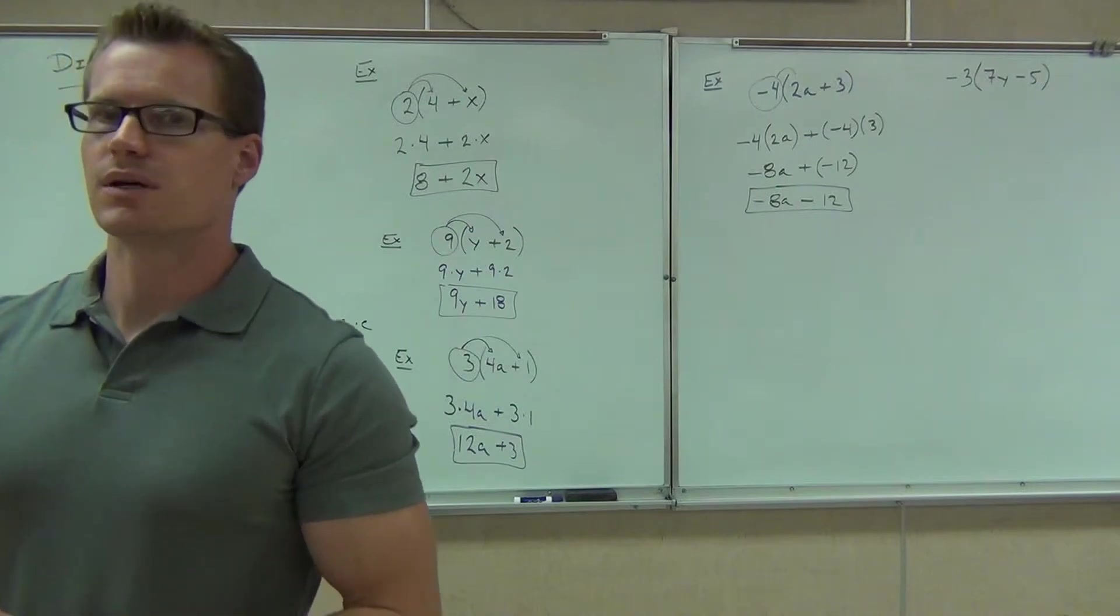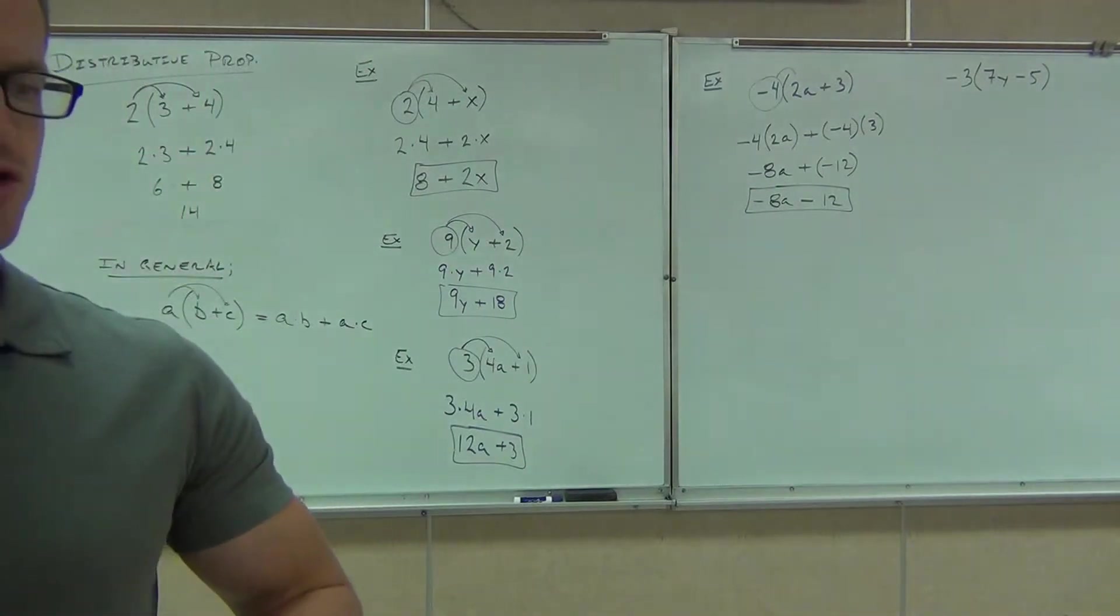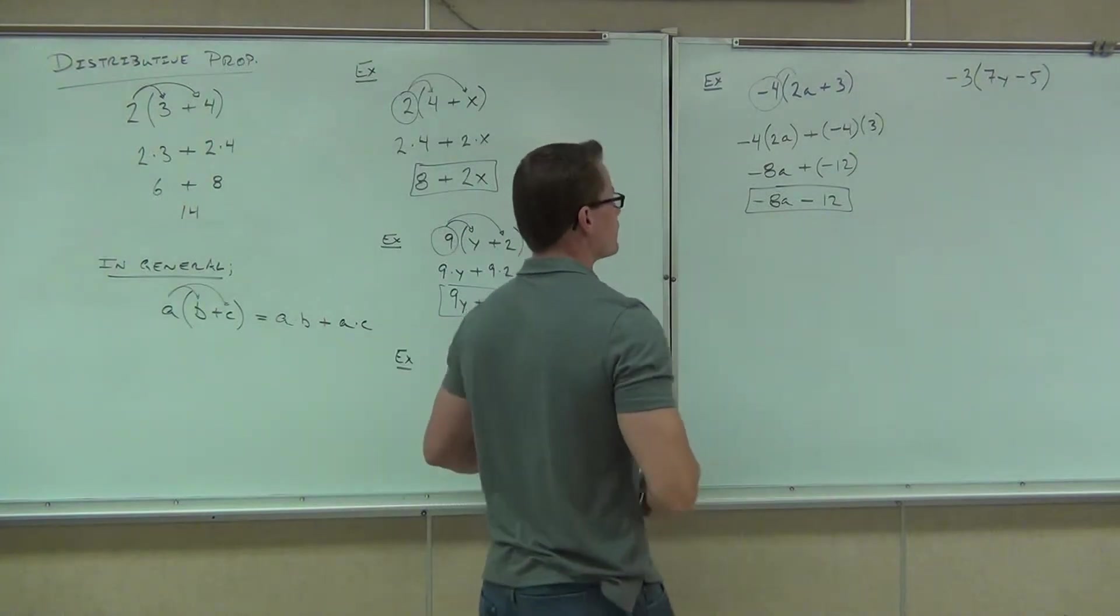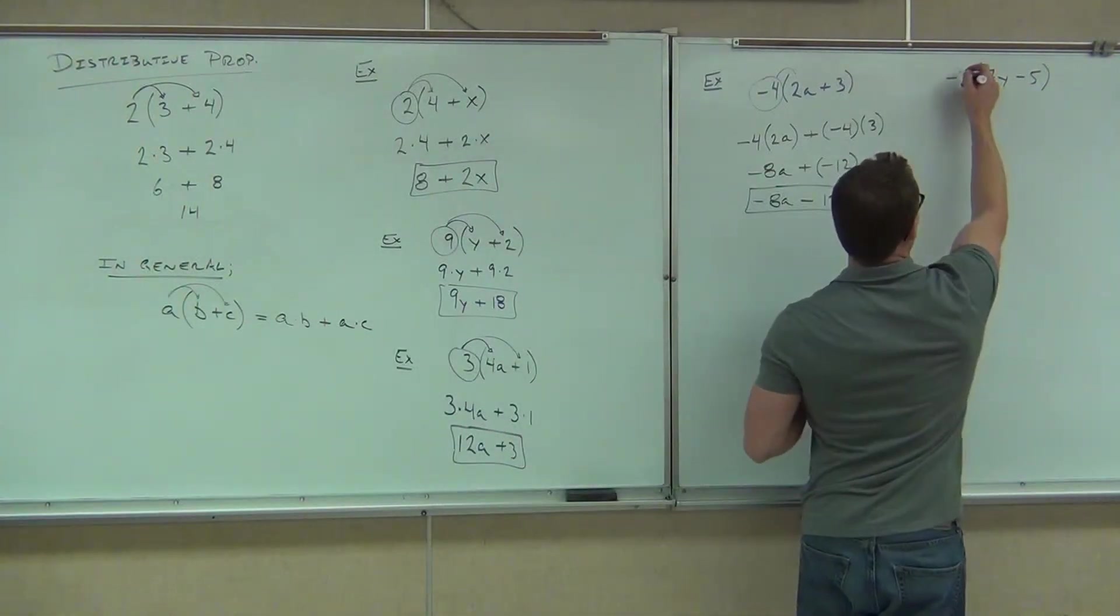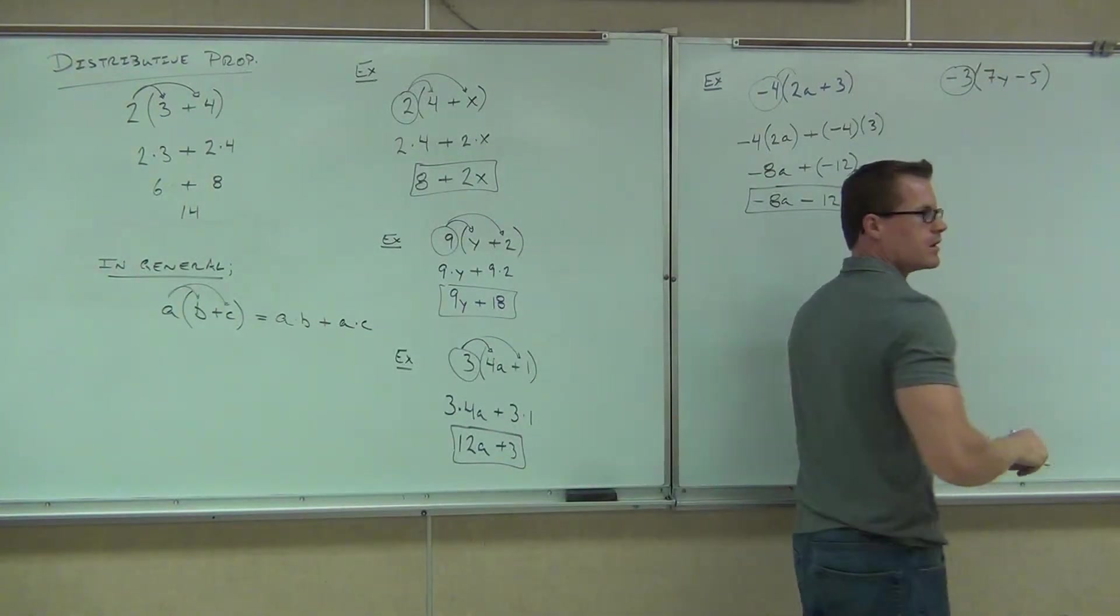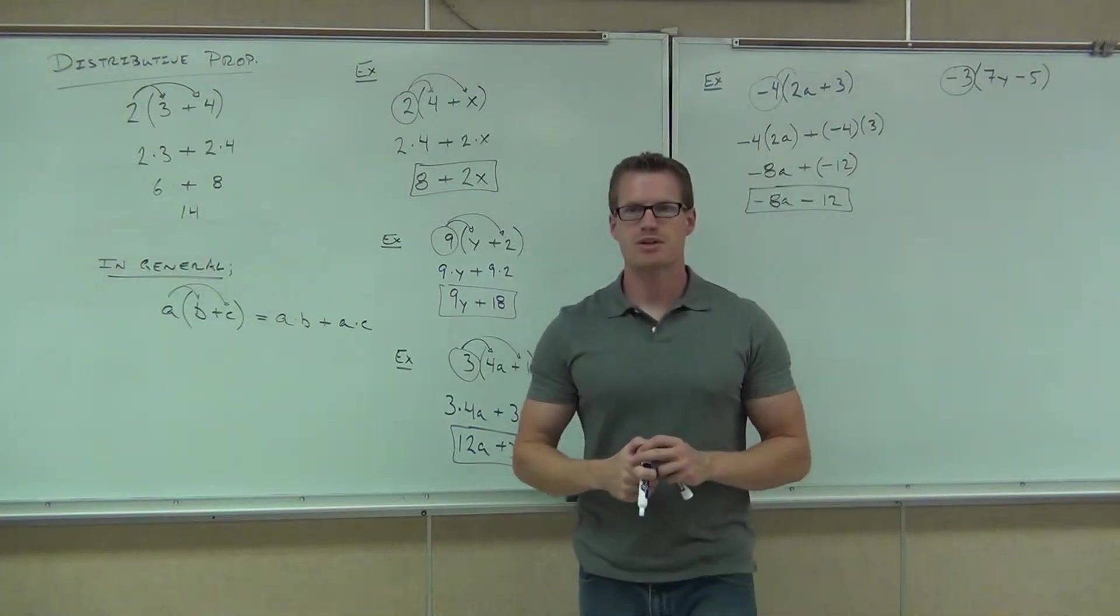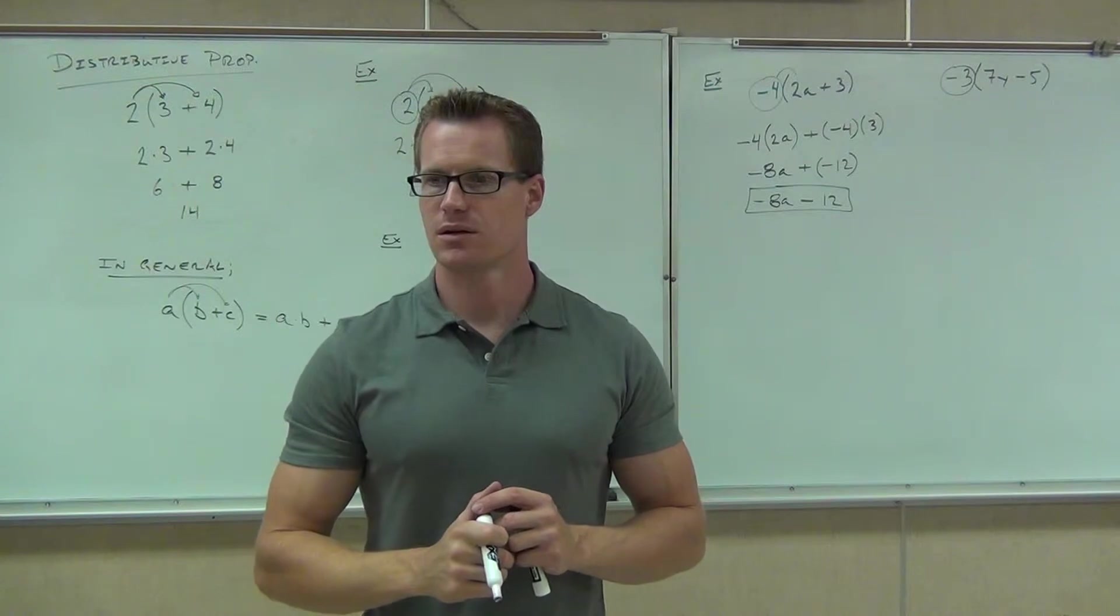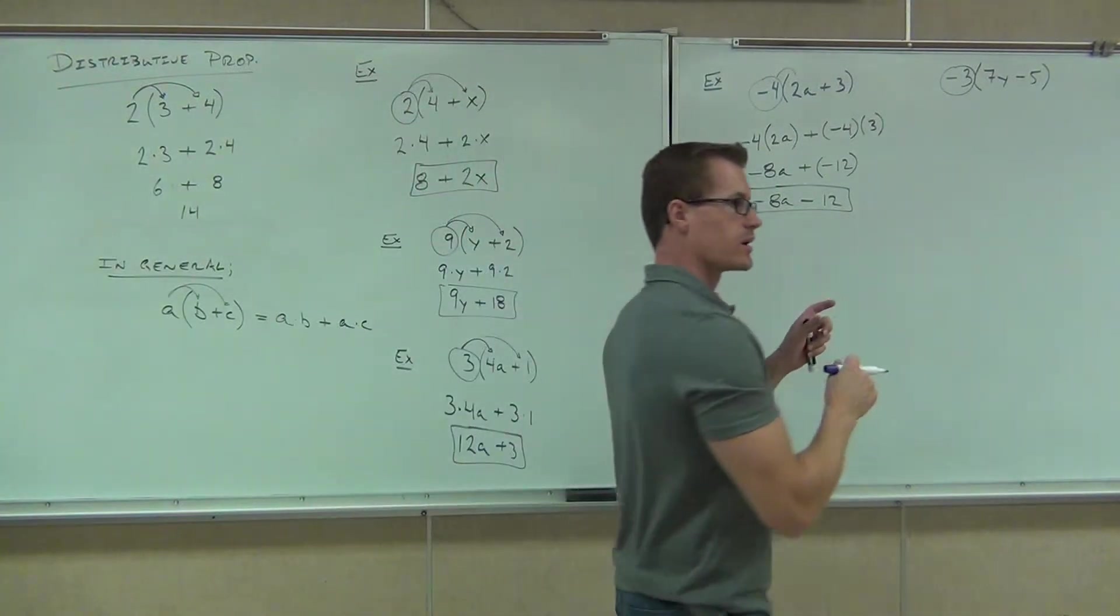Okay, folks. Tell me the number that we are distributing, please. Negative 3. Good. Not just 3, negative 3. I want you to circle the negative 3. Do that for me right now. Circle the negative 3. How many things, how many terms are we multiplying by negative 3 in this case? 2. Good. Both of those inside. So let's go ahead and show that.